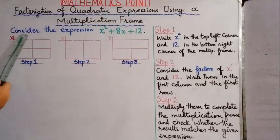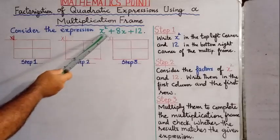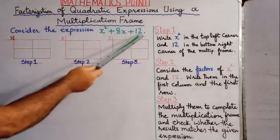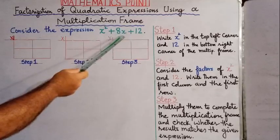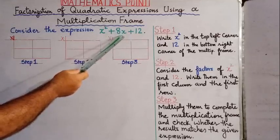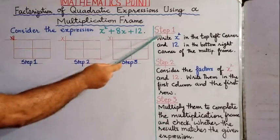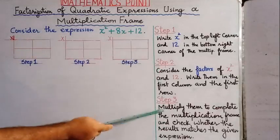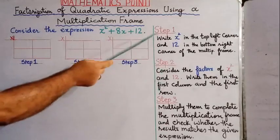We are considering the expression x² + 8x + 12, and we have to find out the factors of this given expression. There are 3 steps: step number 1, step number 2, and step number 3. We are going to follow these steps one by one.